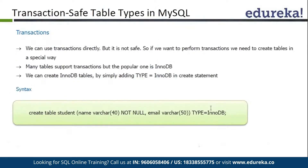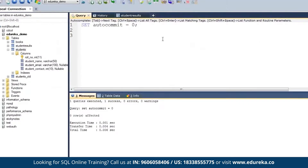Let's see what AUTO_COMMIT does. If we set AUTO_COMMIT equal to 1 and execute it, then if we start a transaction and run something, it will be committed automatically. To make a proper transaction, we keep AUTO_COMMIT equal to 0. So I will do SET AUTO_COMMIT equal to 0.